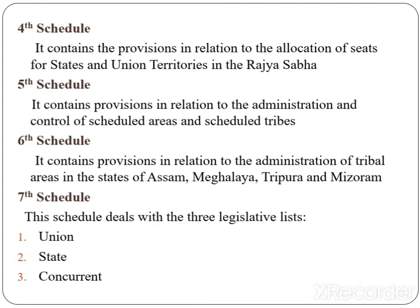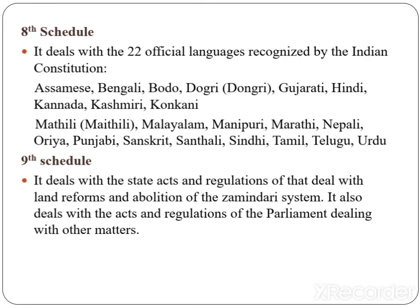Seventh schedule: This schedule deals with three legislative lists. It contains the Union List, State List, and Concurrent List — that is, the federal division of legislative powers.